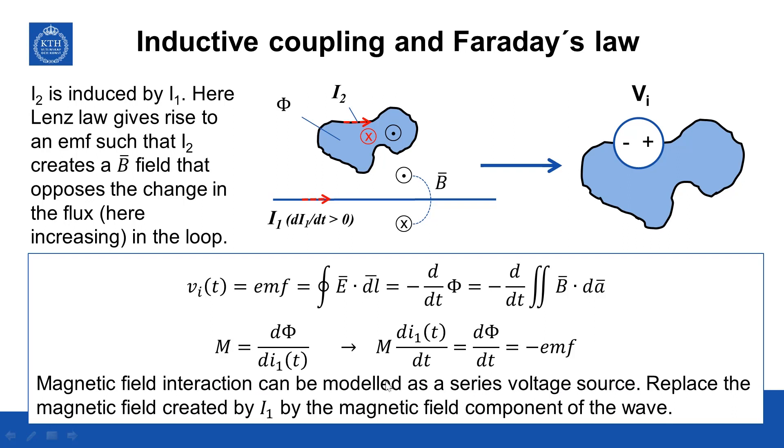Whereas in the problem that we have now we will be replacing the magnetic field created by this current I1 by the magnetic field component of the wave.